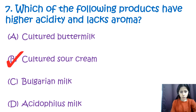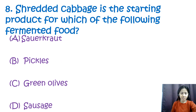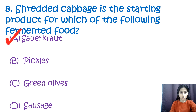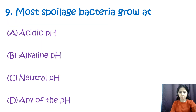Question number eight: shredded cabbage is the starting product for which of the following fermented foods? Option A: sauerkraut, option B: pickles, option C: green olives, and option D: sausages. The correct answer is option A — sauerkraut. Shredded cabbage is fermented and this fermented product is known as sauerkraut.